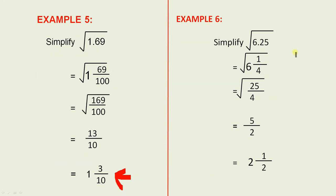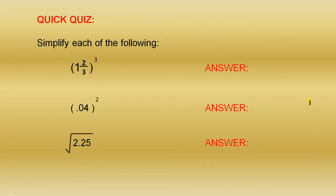And finally, Example 6: The square root of 6.25 is the same as the square root of 6 and a quarter, which is the square root of 25 over 4. And that's 5 over 2, which is 2 and a half. Here's a quick quiz to help you. Please check through the video at any time.